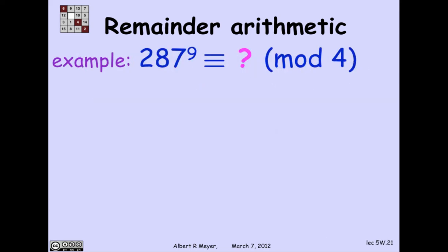Let's do an application of this remainder arithmetic idea. Suppose I want to figure out what's 287 to the 9th power modulo 4. Well, for a start, if I take the remainder of 287 divided by 4, it's not very hard to check that that's 3.